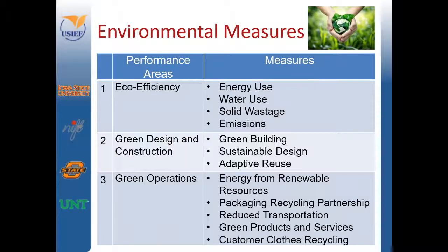Environmental measures would also exist within a scoring framework of the triple bottom line. Performance areas may include eco-efficiency, green design and construction, and green operations. Some areas you may already be familiar with on a scoring framework of environmental measures include LEED design. Within each of these performance areas, we look at specific measures such as energy use, water use, solid wastage, and emissions. Additional opportunities of measurement also exist. Take a moment to review these performance areas and their measures.